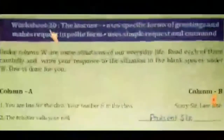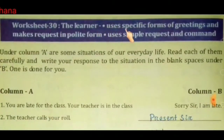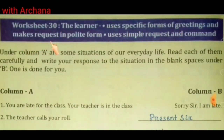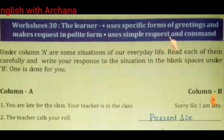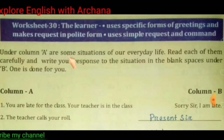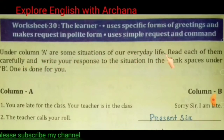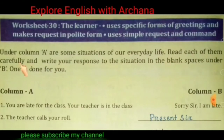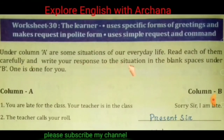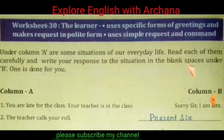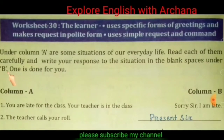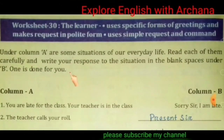Worksheet 30: The learner uses specific forms of greetings and makes requests in polite form, using simple request and command. Under column A are some situations of our everyday life. Read each of them carefully and write your response to the situation in the blank spaces under B. One is done for you.